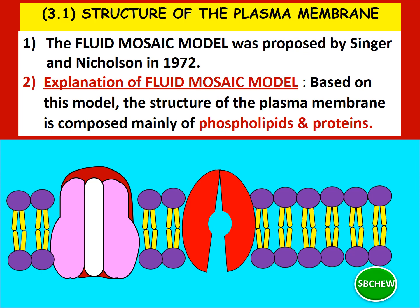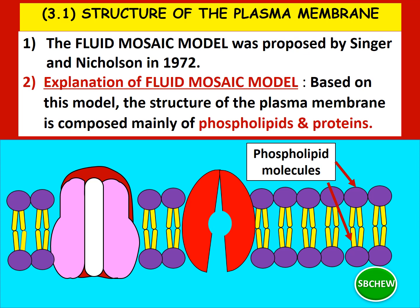What is the fluid mosaic model? We have to be able to explain the words fluid and mosaic. The fluid mosaic model is used to explain the structure of the plasma membrane, and based on this model, the structure of the plasma membrane is composed of mainly two types of molecules. Firstly, the phospholipid molecules — the word phospholipid means this molecule consists of a lipid part with a phosphate group in it. Secondly, there are also protein molecules, such as these two proteins here, that carry out different functions.